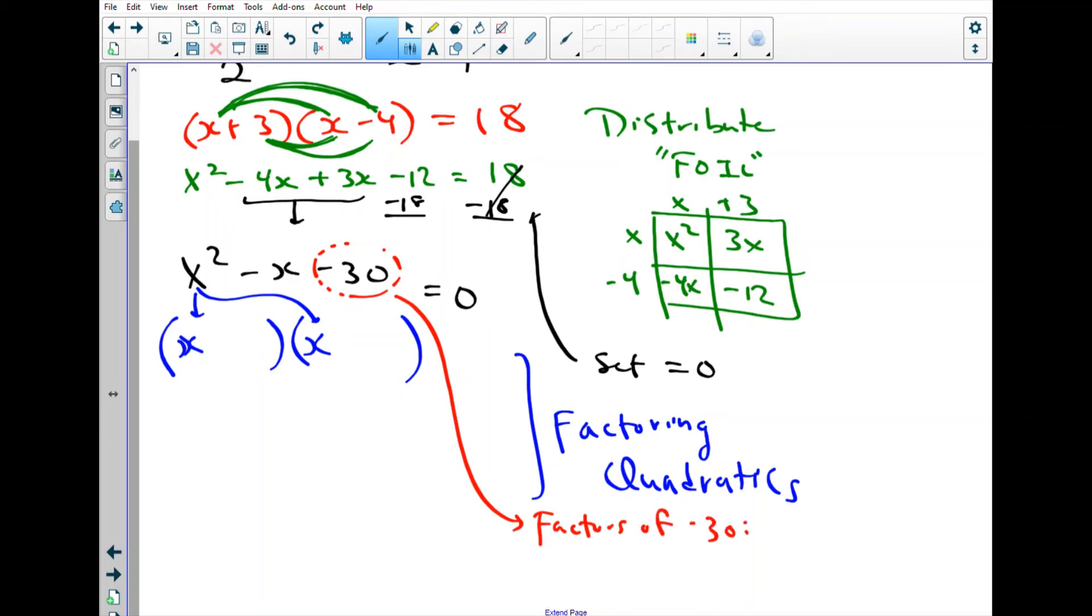We need to consider carefully the factors of this number. What are two numbers that multiply to give negative 30? Well, you got 1 and 30. You got 2 and 15. You got 3 and 10. And finally you have 5 and 6. So some combination of these, if this is factorable, will produce the appropriate binomials.